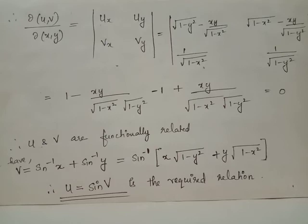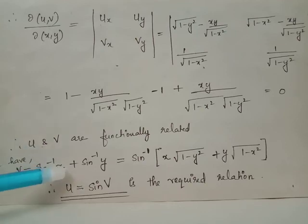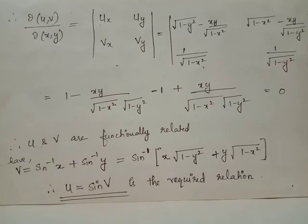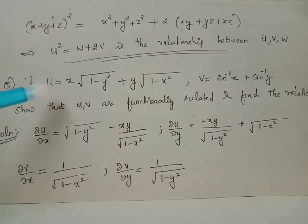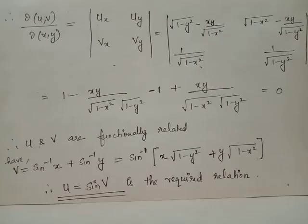Thus we conclude that functions u and V are functionally related. The standard relation V equals sine inverse x plus sine inverse y can also be written as sine inverse of x times root of 1 minus y squared plus y times root of 1 minus x squared. The expression inside the brackets is exactly u as defined in our question. Therefore, V equals sine inverse u, or equivalently u equals sine V, which is the required relation between functions u and V.